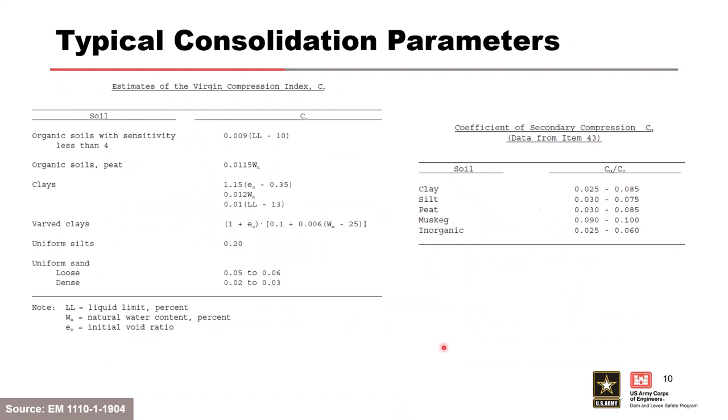This table shows a range of typical C sub C and C sub R values. When you run these tests, sample disturbance can significantly affect results, so check that your values fall within a reasonable range. If something is way out of left field, something may have gone wrong during testing. Taking more samples and doing more testing helps identify outliers.